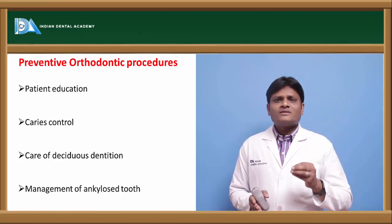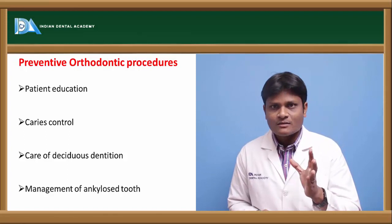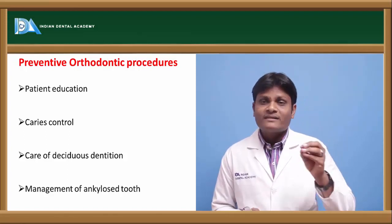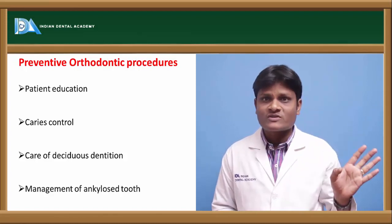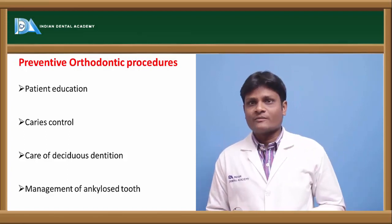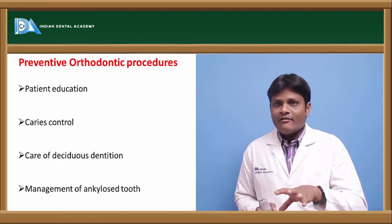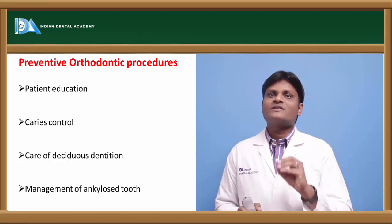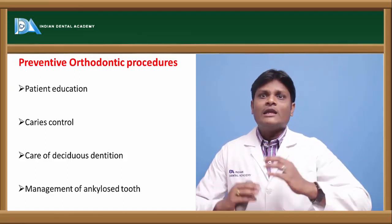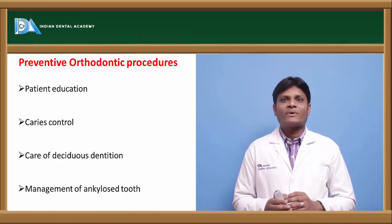These ankylosed deciduous teeth should be properly managed or extracted with proper technique at the time of their shedding — not before. They should be left in place until the shedding time arrives. Once the shedding time has arrived, the ankylosed deciduous tooth should be surgically extracted, thereby eliminating the interference to eruption of the succedaneous permanent tooth.